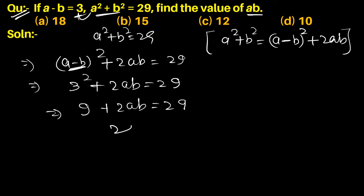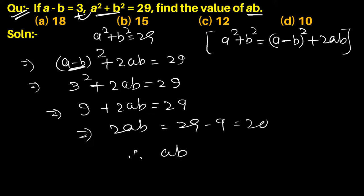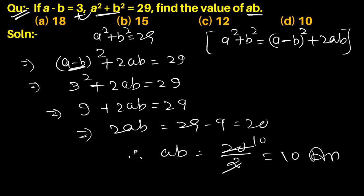So 2ab equals 29 minus 9, which is 20. Therefore ab equals 20 divided by 2, which is 10. So option D is the correct answer.